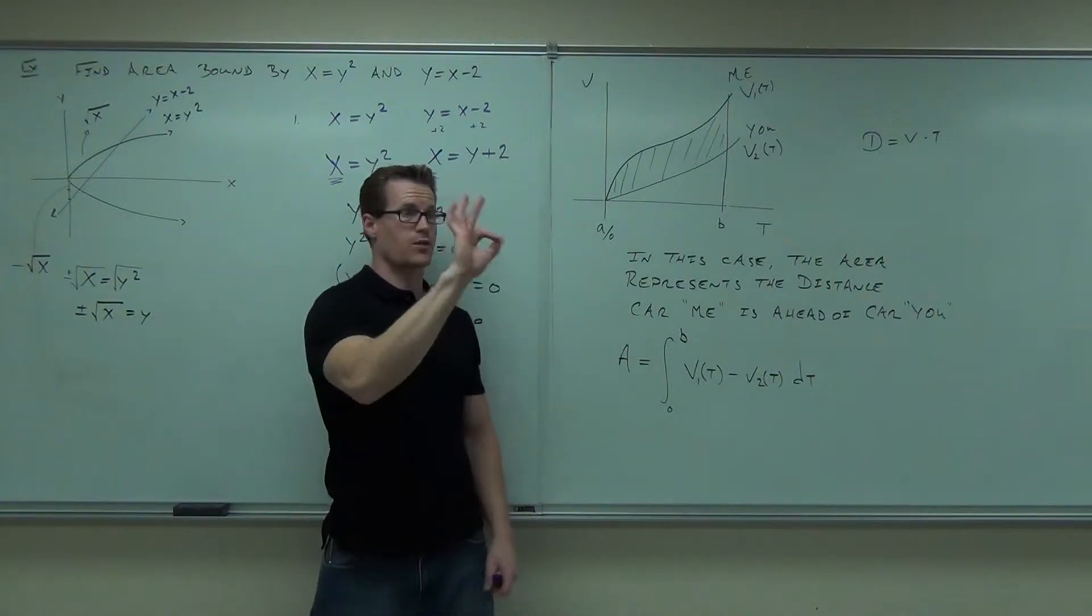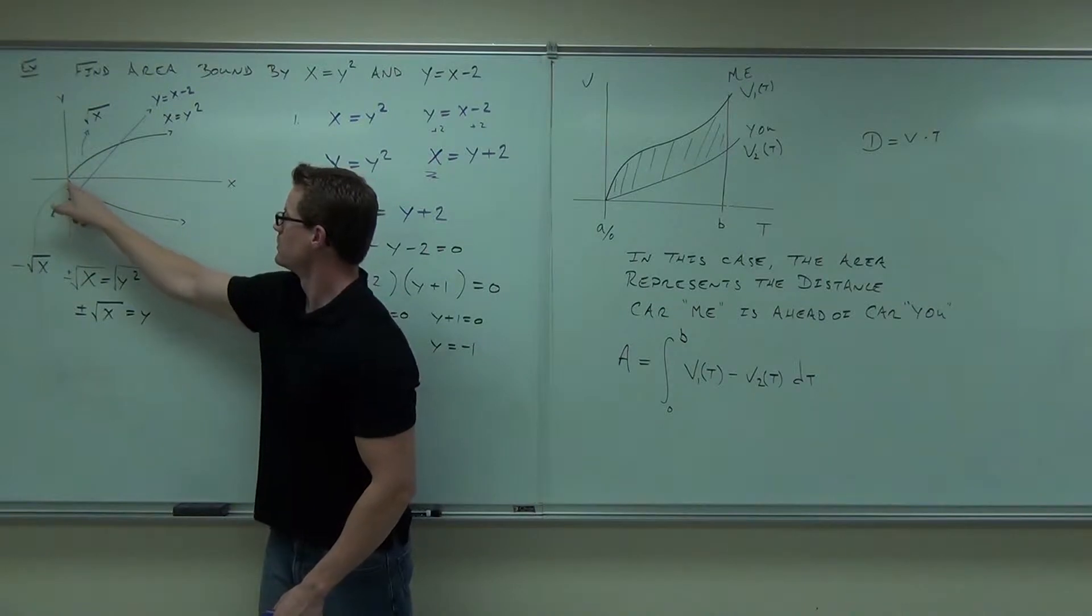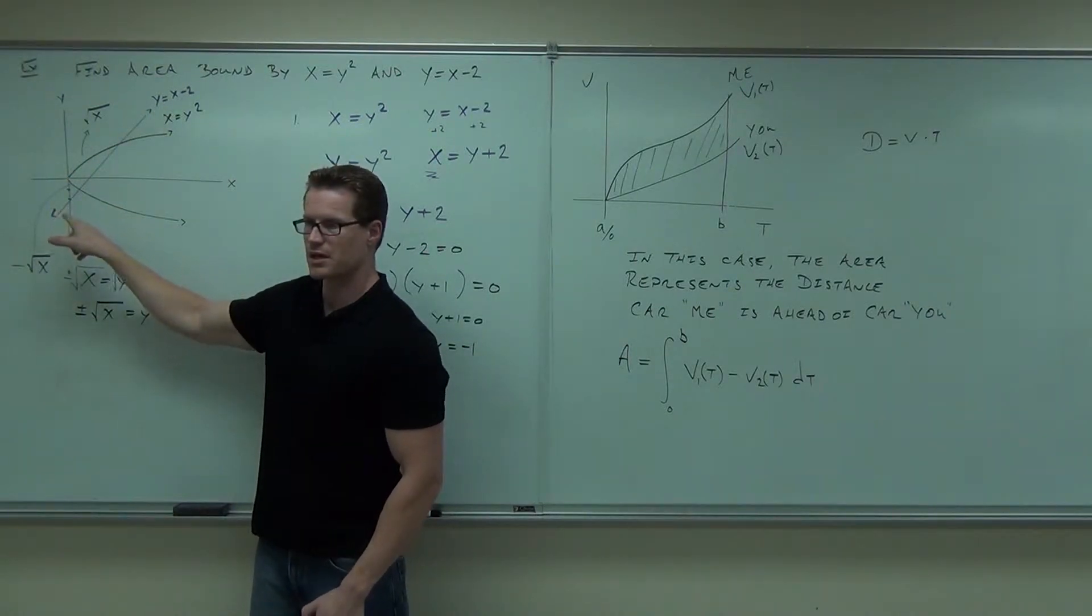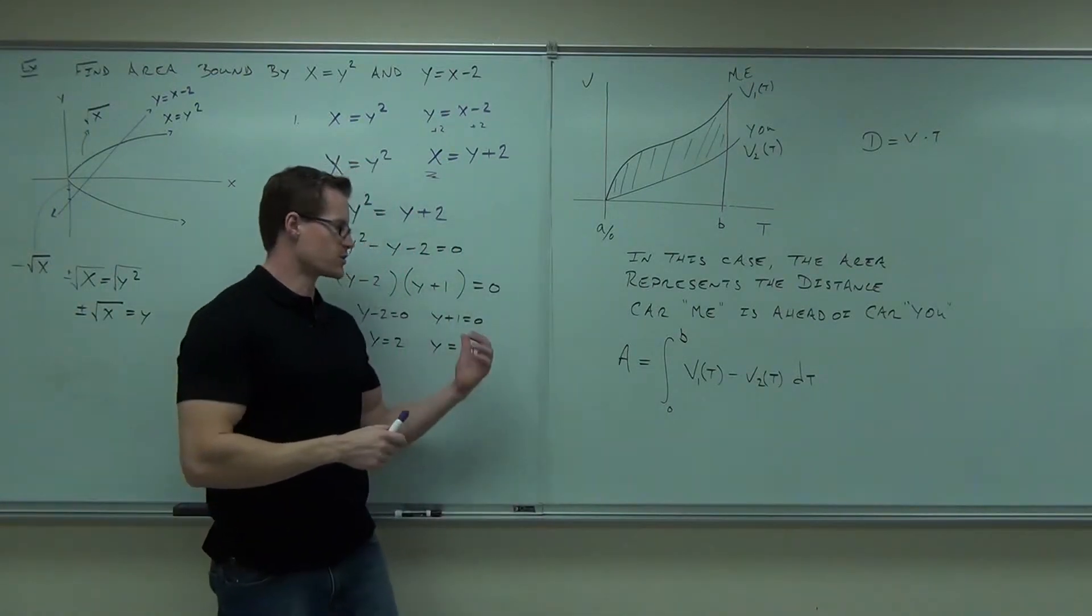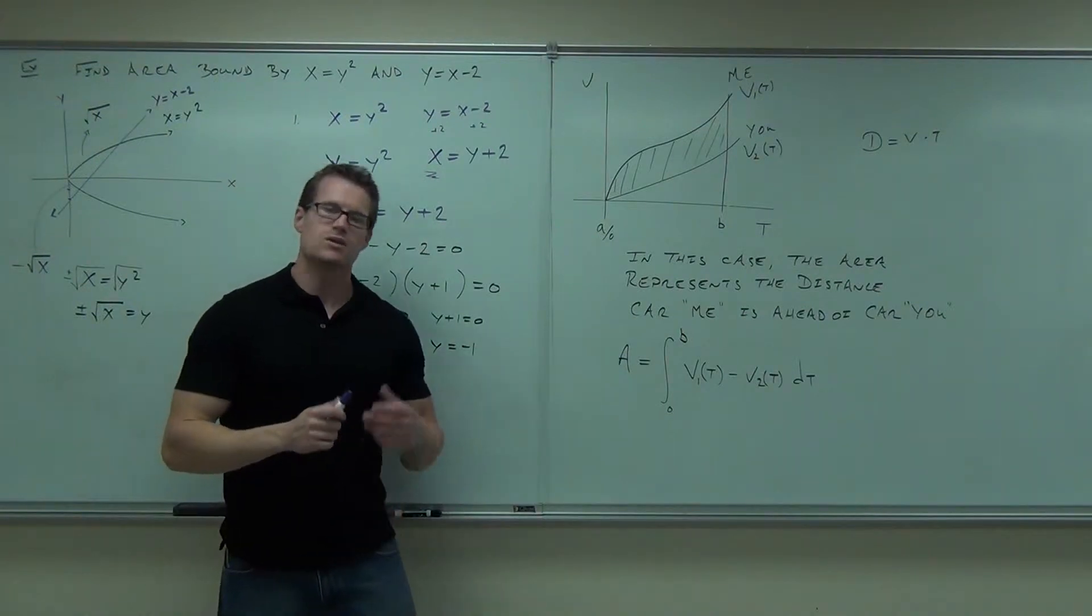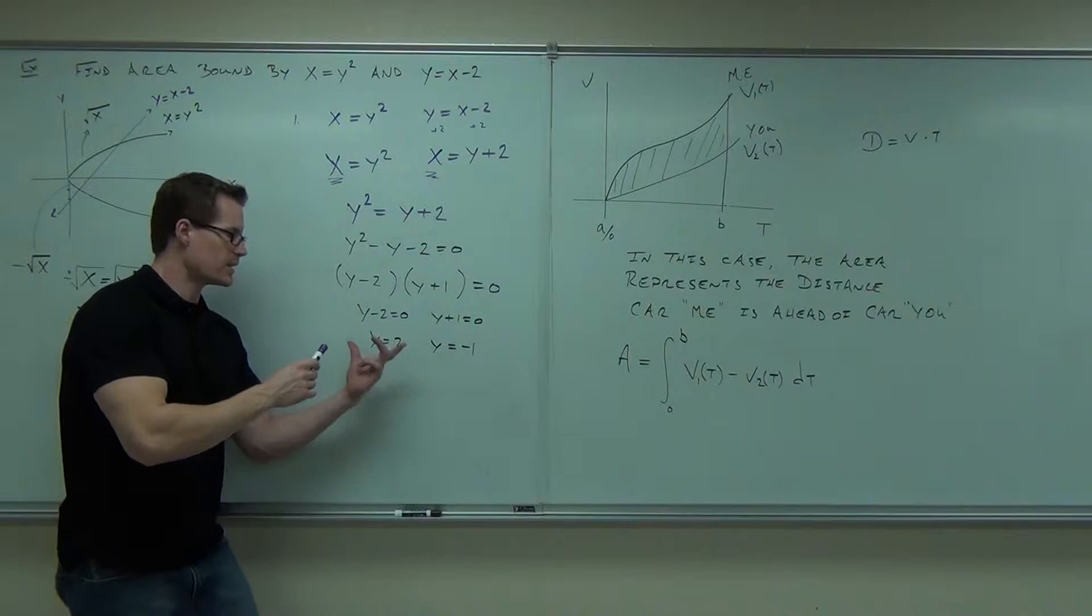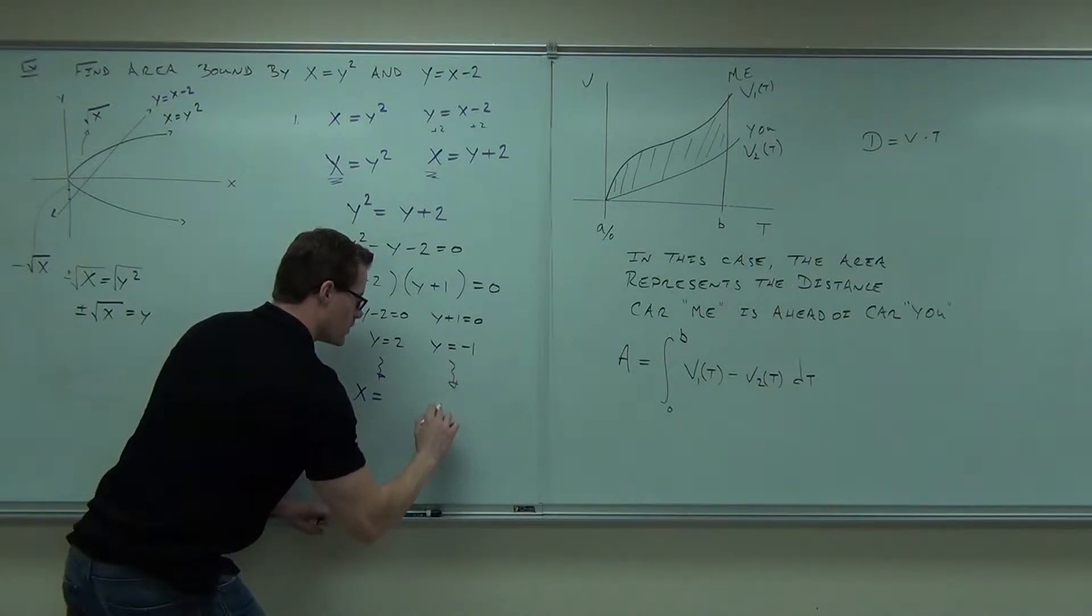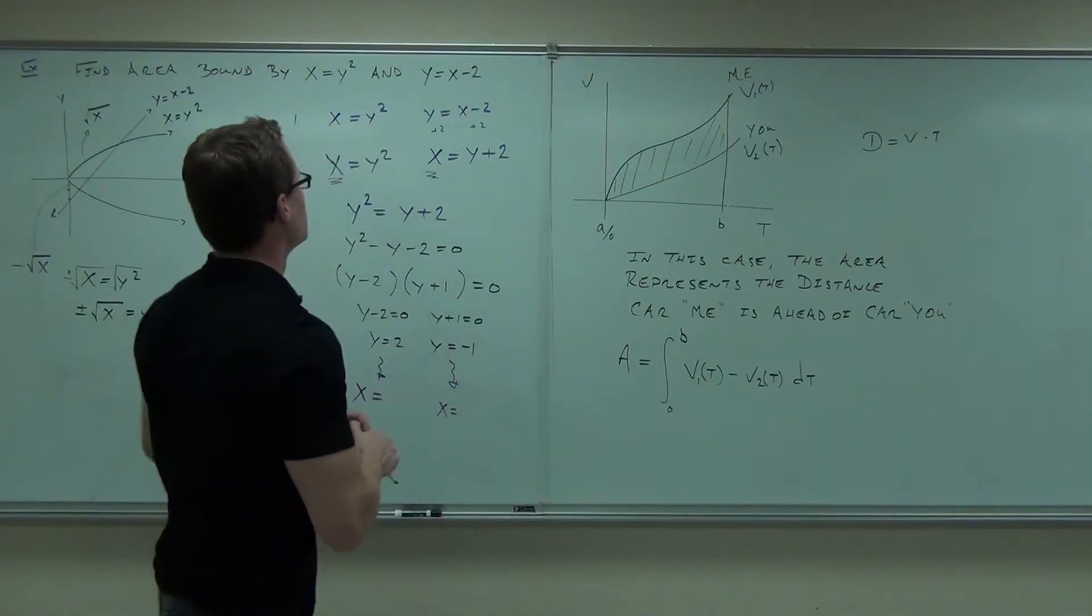How many do we have all together? Three. Three functions in terms of x. The problem is, we are in terms of x. What variable do you solve for? Can you go and change these into x's using what you know? So for y equals 2, x equals what? For y equals negative 1, x equals what? Four and one.